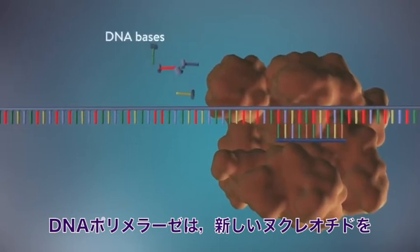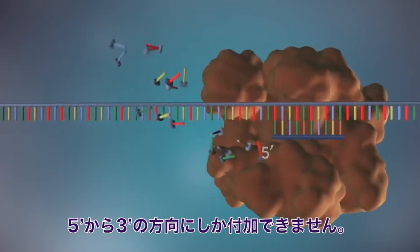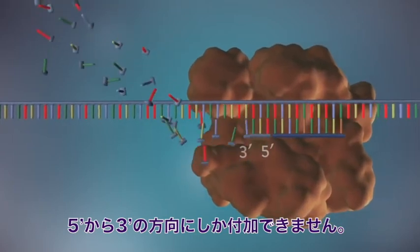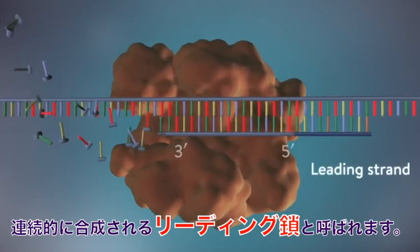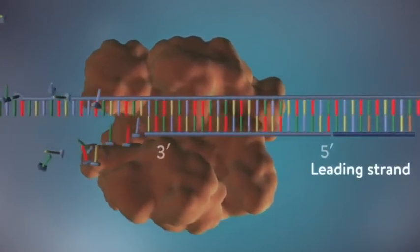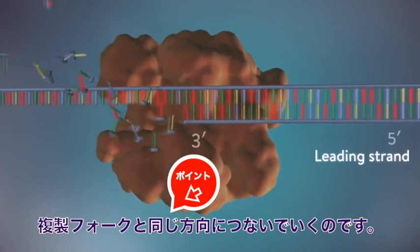DNA polymerase can only add DNA bases in one direction, from the five prime end to the three prime end. One of the new strands of DNA, the leading strand, is made continuously, the DNA polymerase adding bases one by one in the five prime to three prime direction.